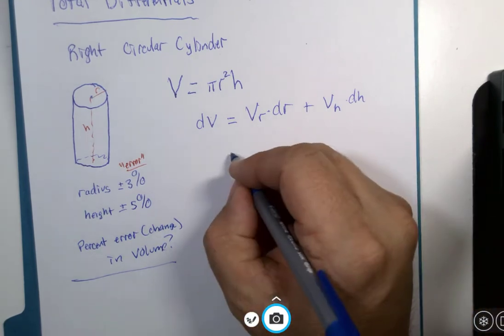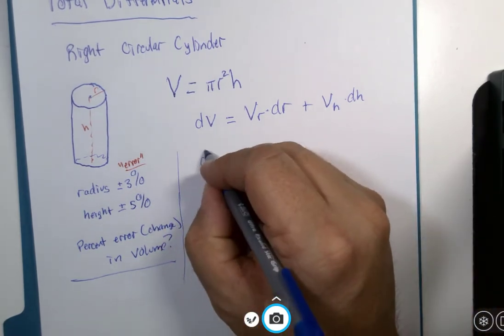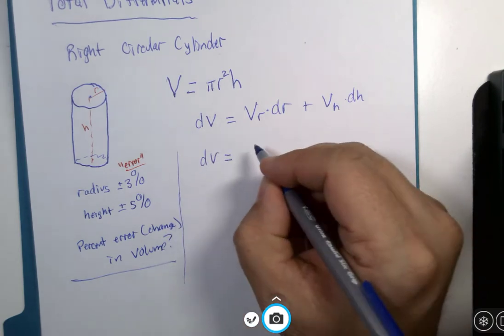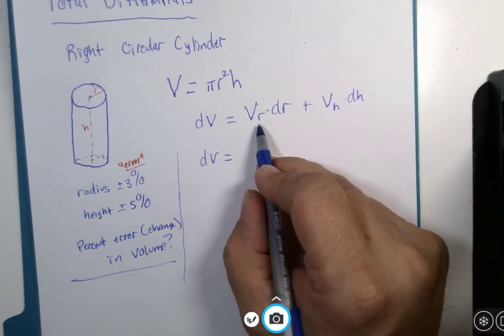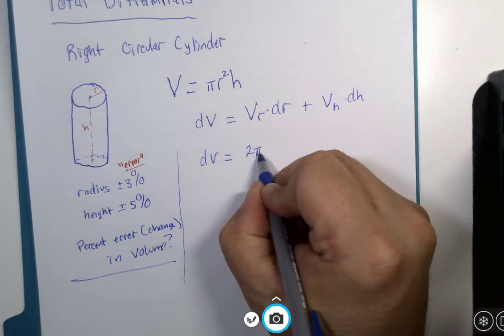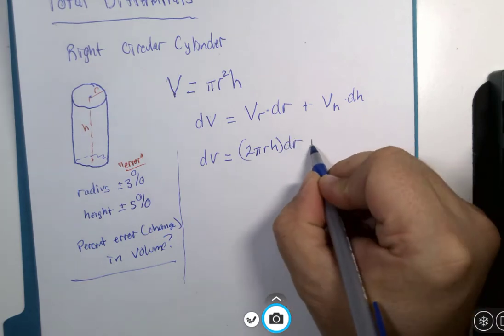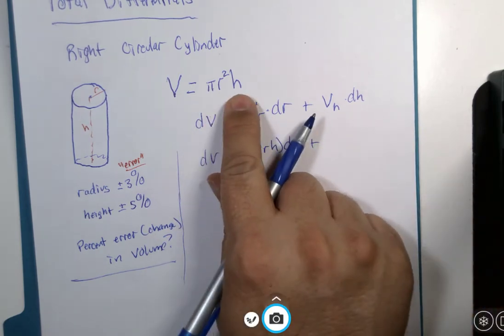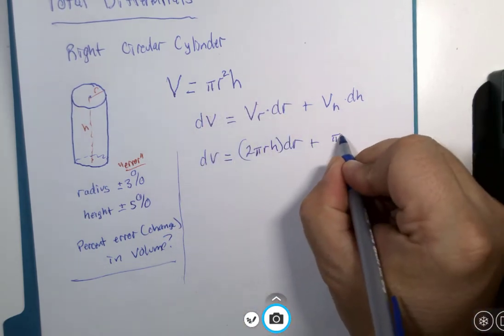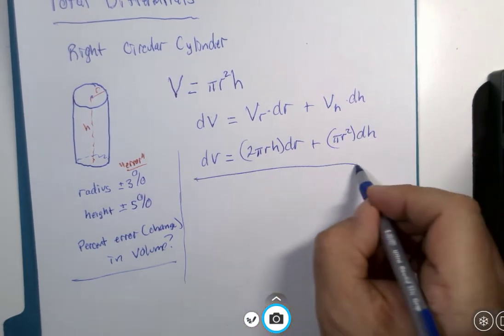So in this particular problem, dV would be then, with respect to r, 2πrh dr plus h's derivative is 1, πr² dh.